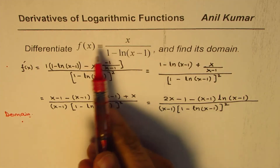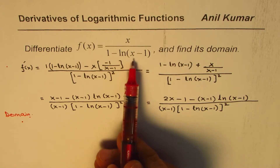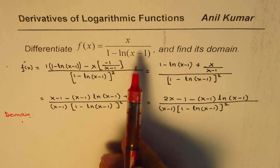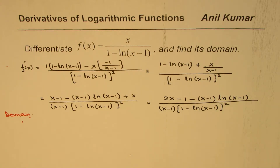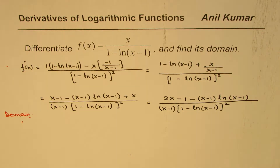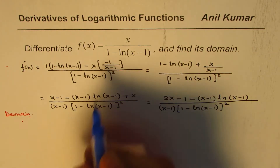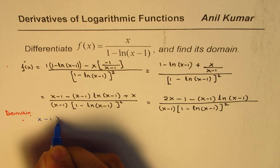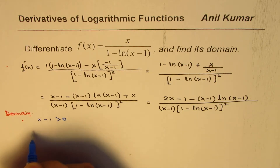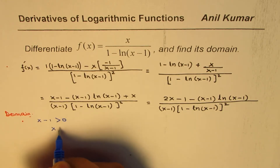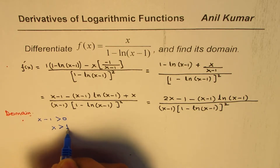From this function, you can see that for ln(x minus 1), the argument (x minus 1) should always be positive. So the first restriction here is that x minus 1 should be greater than 0, and that gives us x greater than 1.